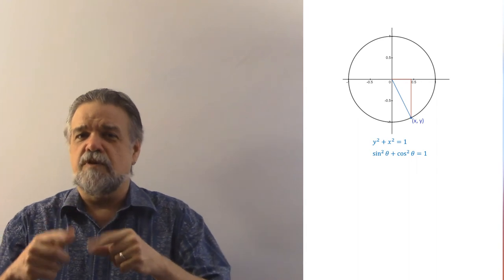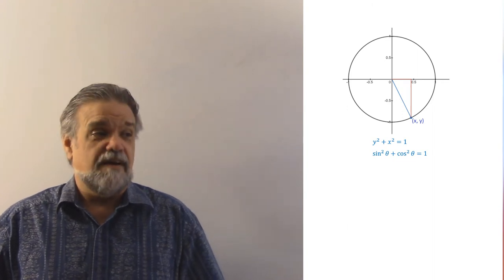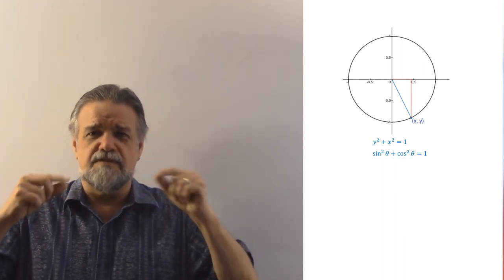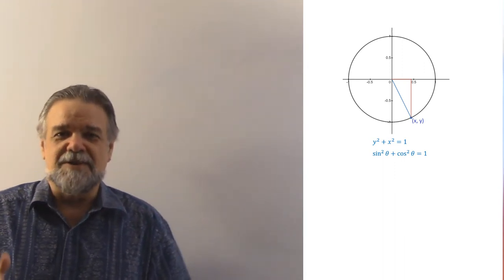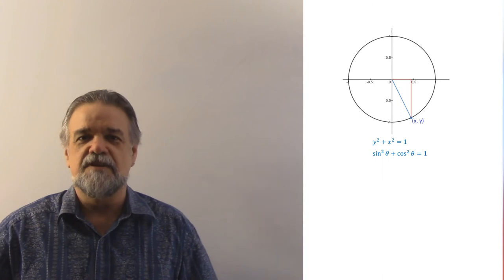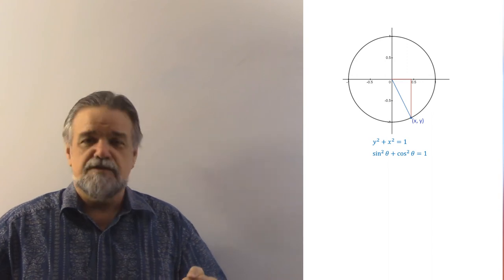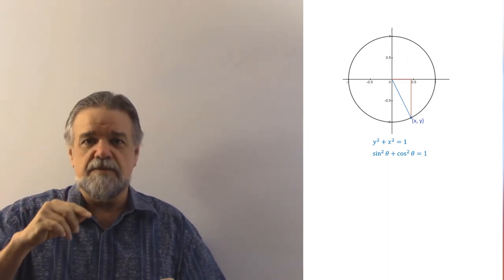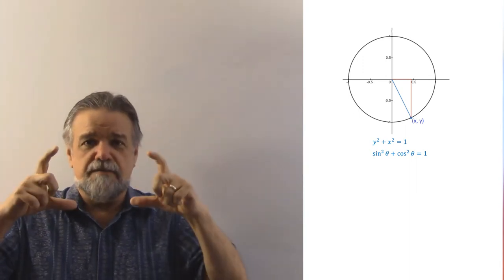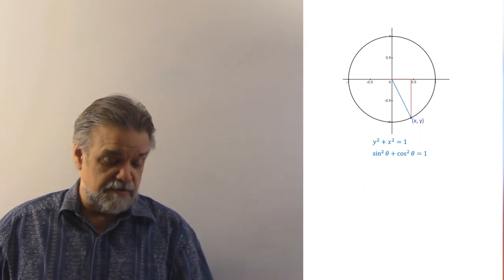A note on notation: sine squared of theta is somewhat confusing — it means the sine of theta, squared. If I were in charge, we'd just write (sin θ)², but this is the notation we have. So sine of theta squared plus cosine of theta squared equals one squared, also known as one. That's why we write sine squared plus cosine squared equals one.